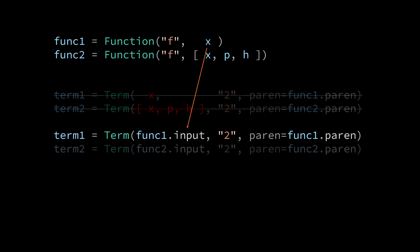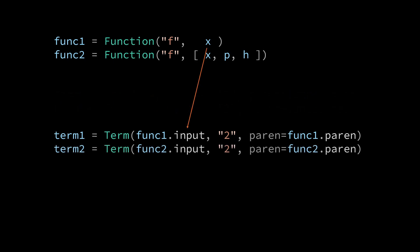And for term2, we can pass in func2.input, which will pass in the x plus and h into term2. Now, at this point, you might be wondering why we went to the trouble of creating explicit math strings for x plus and h when we ended up just passing in func2.input anyway.